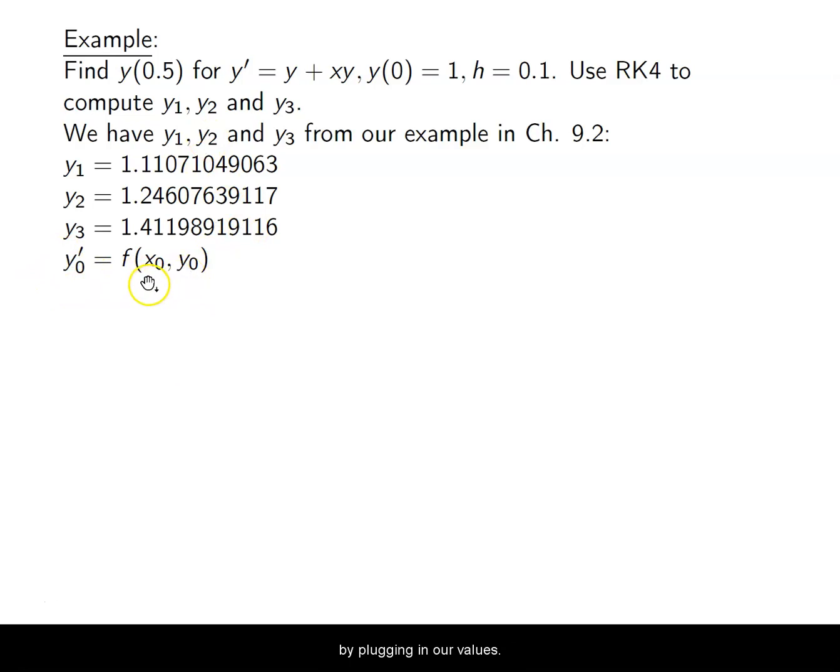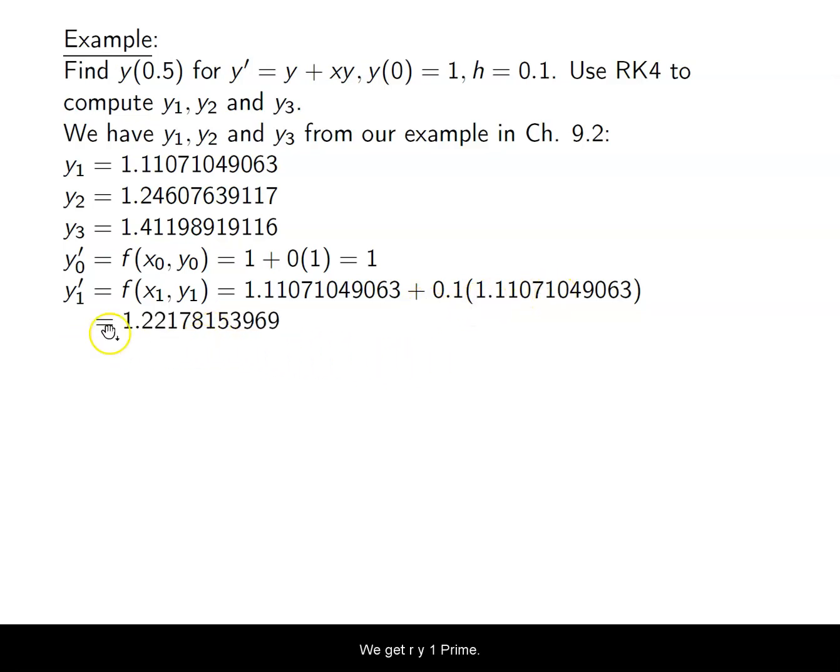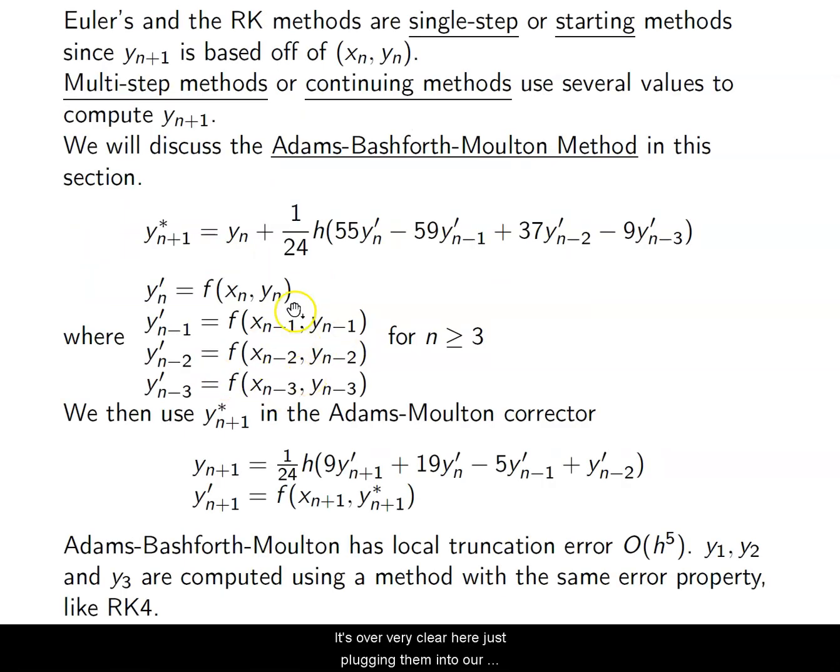So, coming back to our formula, we're going to use those here. So we're starting at Y3, so n minus 3 is the first one, and we're moving our way up. So Y' of 0 is we're going to start off by plugging in our values with the values that we have. So 0 and 1, we know we get out 1 for that. Y1, we're going to use that with our Y1 values. So X1 is 0.1, Y1 is this value. So we plug in those values, Y plus X times Y, we get our Y1 prime.